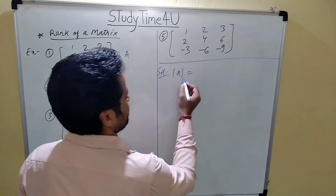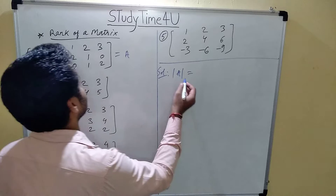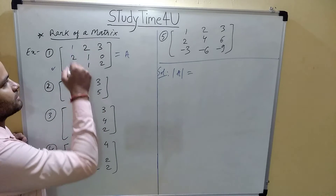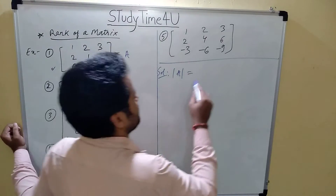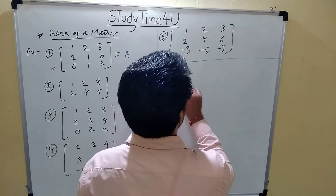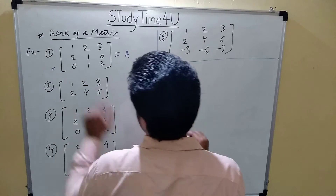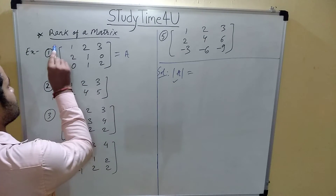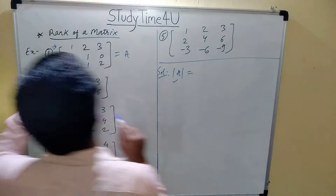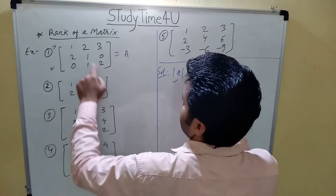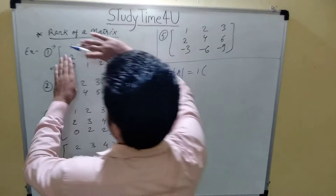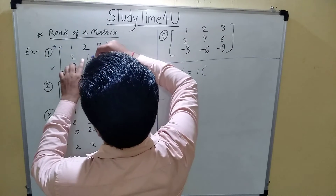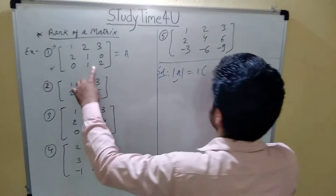Here we are considering all 3 rows and 3 columns — there are 3 rows and 3 columns. You know how to solve a determinant: first we solve along the first row, taking 1 then in brackets leaving the first row and first column and cross-multiplying the other values.